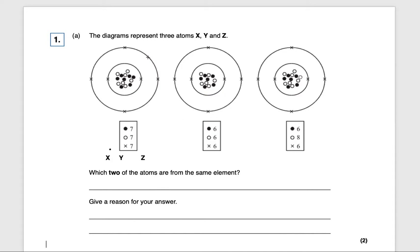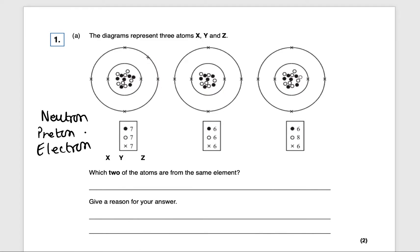We need to know which one is a neutron, which one is a proton, and which one is an electron. The number of protons is the same as the number of electrons, so the number of crosses on the outside must be the same as the circles inside.